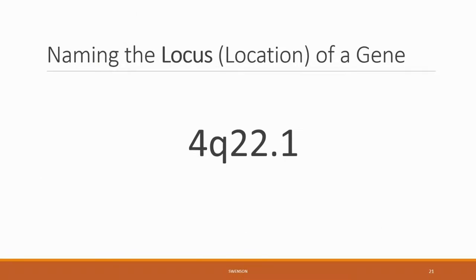Geneticists have a way of signifying the area for each instruction. For example, the alpha-synuclein protein gene is found on the fourth chromosome, the Q-arm at location 22.1.